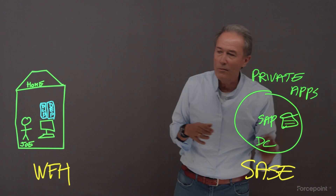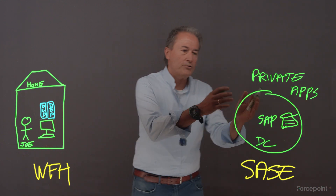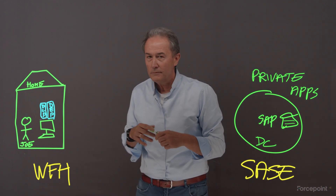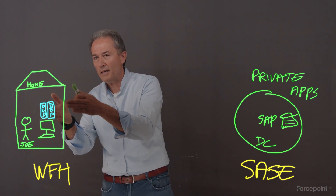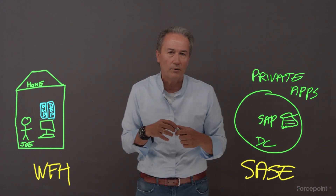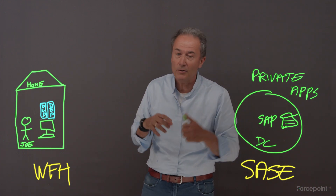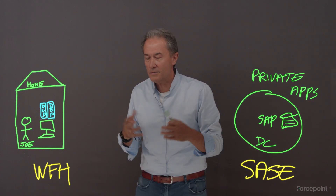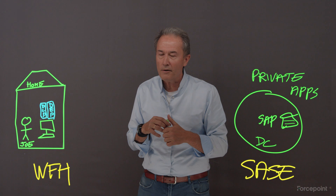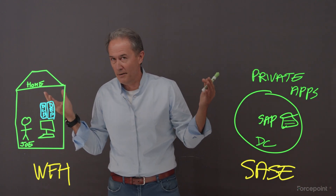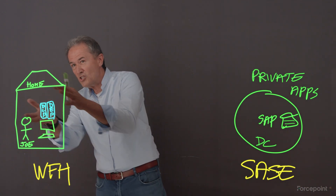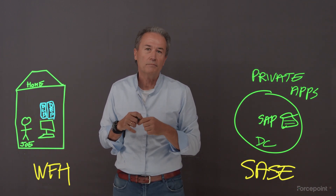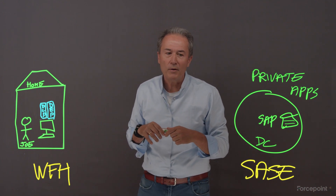We want Joe to connect from home to these private apps. How do we do that? Traditionally, Joe would use a VPN — a virtual private network. Here's the problem with VPN. When the COVID-19 crisis started, we worked with a very large retailer in the US — we're talking a million-plus employees — all going home at the same time. Guess what happened to the VPN? Kaboom. The VPN went down.